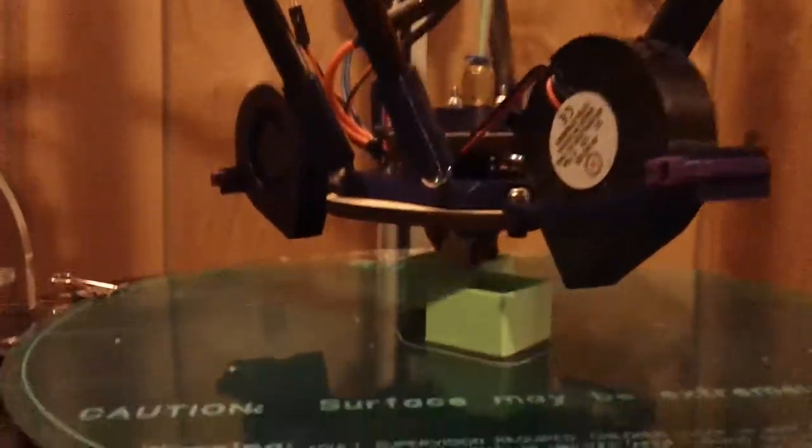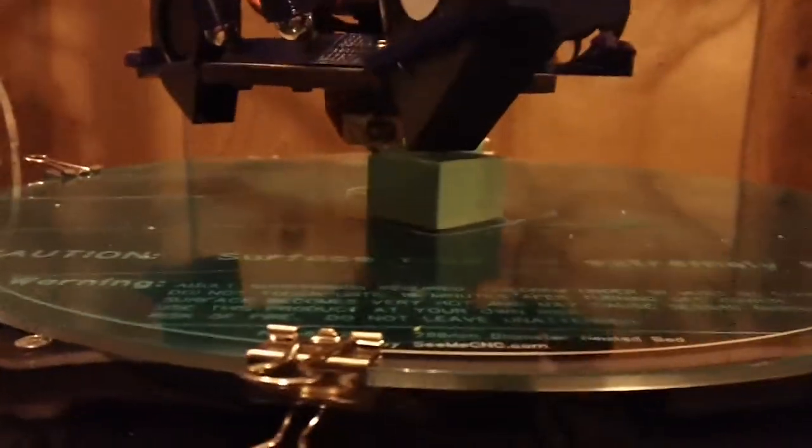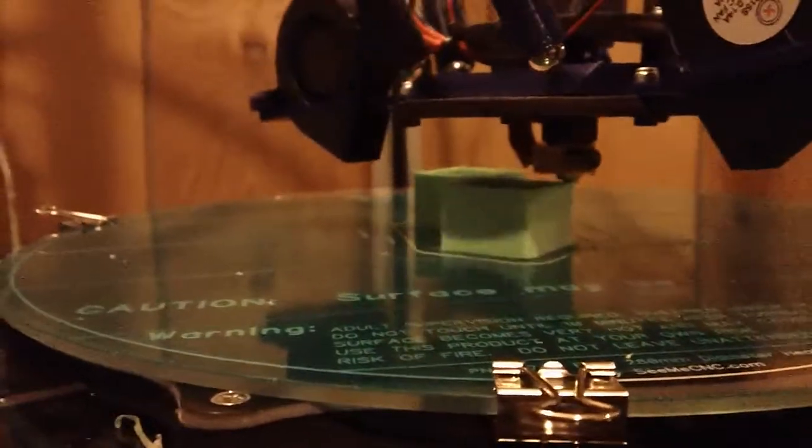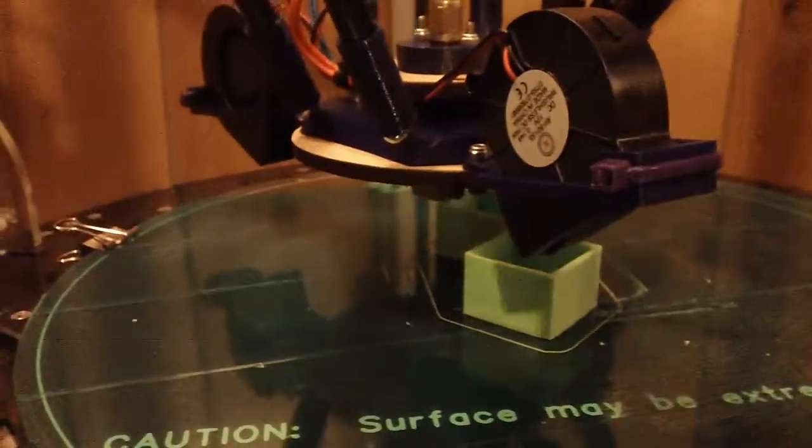Alright, I've got a successful Rostock Max print happening. I fixed the lean issue with the help of Osiris on IRC. I'm printing two boxes here.